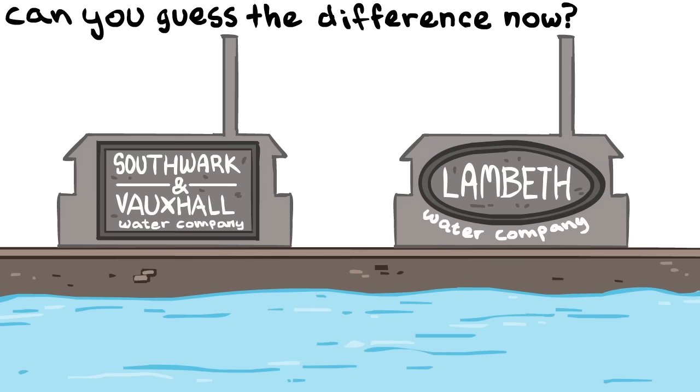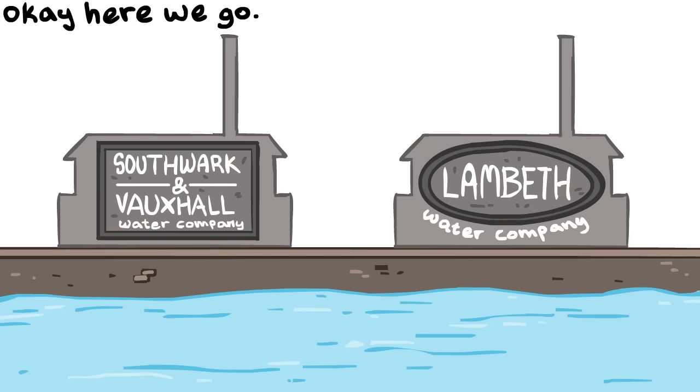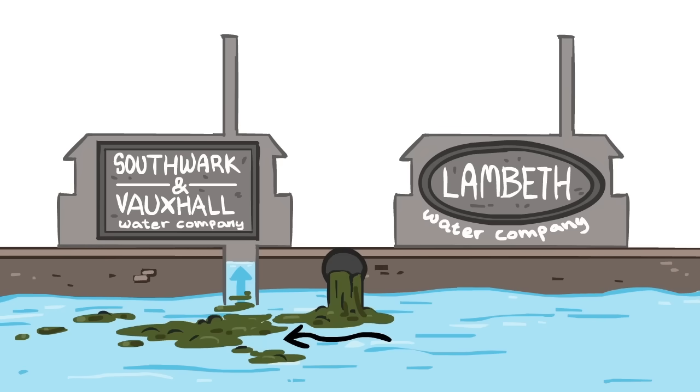Which leads us right back to the difference between Southwork and Vauxhall and Lambeth. What was it that John Snow saw right there in those books that caused his Eureka moment? Well, S&V was getting their water from downstream of where the sewage emptied into the Thames, while Lambeth had recently moved their facilities above the sewage outflows.